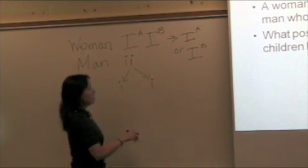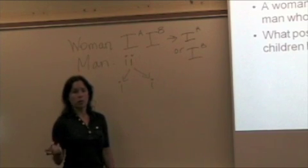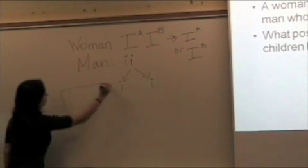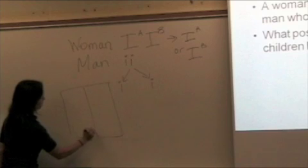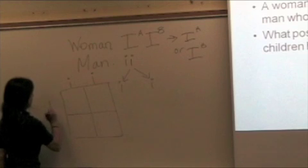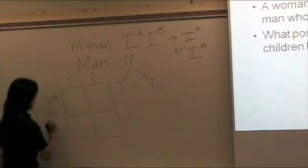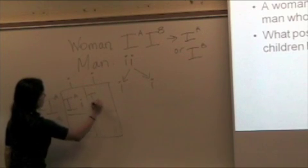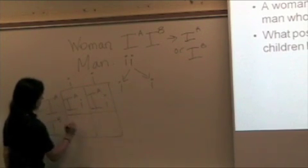We're going to set this up as a monohybrid cross, a 2x2 Punnett Square. Put the gametes on the top and on the side. Then we will fertilize in the boxes. I'm going to write the recessive second if there is a recessive.